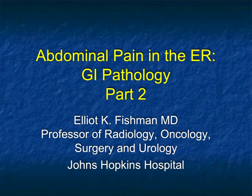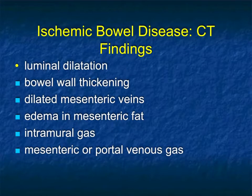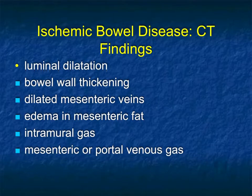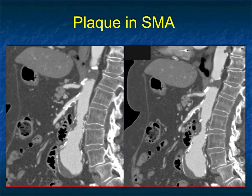This is Elliot Fishman and welcome to part 2 of Abdominal Pain in the ER, focusing on GI pathology. Last time we discussed ischemic bowel, the importance of looking at the earliest changes of dilatation, bowel wall thickening, and then the transition to intramural gas and portal venous air — the spectrum of disease.